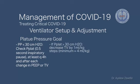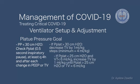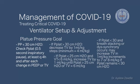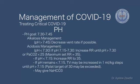If plateau pressure is more than 30, decrease tidal volume by 1 ml/kg to a minimum of 4 ml/kg. If plateau pressure is less than 25 and tidal volume is less than 6, increase tidal volume by 1 ml/kg until plateau pressure exceeds 25. If plateau pressure is less than 30 and the patient has breath stacking or dyssynchrony, increase tidal volume by 1 ml/kg up to 7–8 ml/kg if plateau pressure remains below 30. Target pH should be 7.30–7.45. For alkalosis with pH greater than 7.45, decrease ventilator rate. For acidosis with pH 7.15–7.30, increase respiratory rate. If pH is less than 7.15, increase rate to 35 and if still below 7.15, increase tidal volume by 1 ml/kg. Consider sodium bicarbonate.